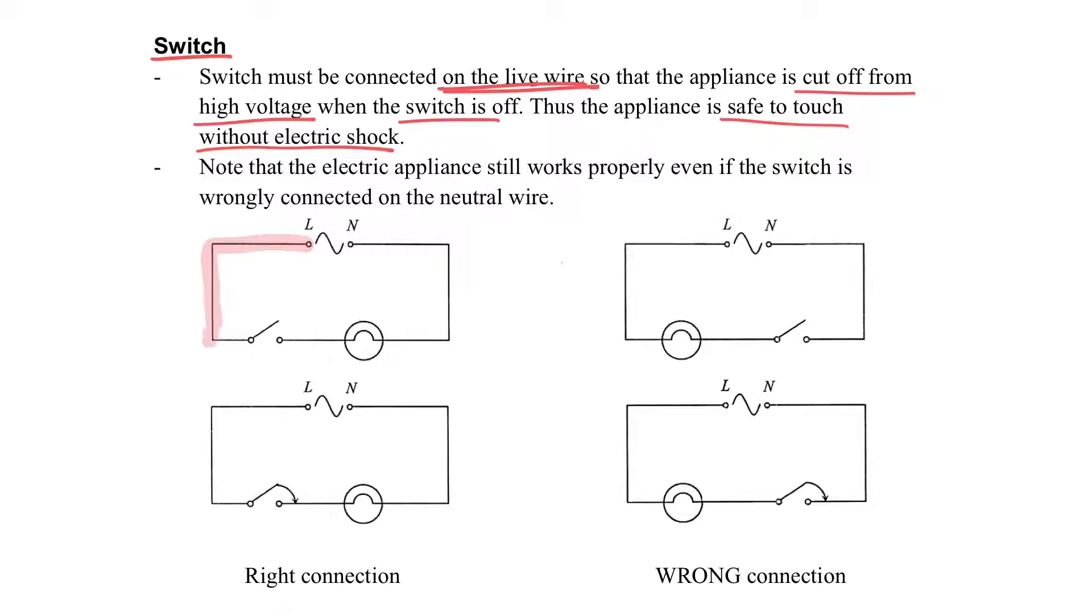You can see that the switch is on the live wire side. When it is open, it cuts off the live wire to the electrical appliances. So only the live wire has the high potential, but the electrical appliances have a zero potential in that case. When the switch is closed, the light bulb surely lights up.